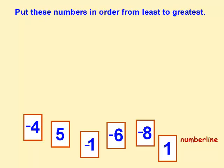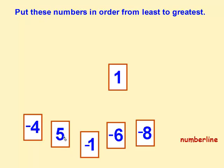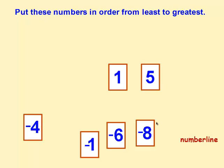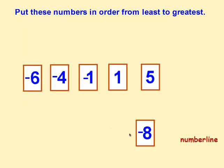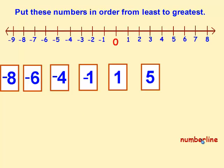Now we're going to put these numbers in order from least to greatest, and I'm not going to use the number line — I'll check it on the number line afterward. I see the positive numbers are 1 and 5, so I'll place 1 first, then 5. Negative 1 is right behind 0, so it's smaller than 1 and 5. The next would be negative 4, then negative 6, and the smallest is negative 8. Let's check it on the number line — negative 8, negative 6, negative 4, negative 1, 1, and 5. Confirmed.